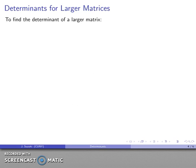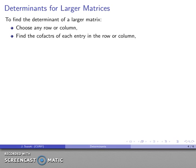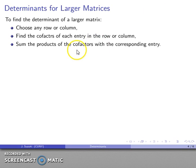Now let's find the determinant of larger matrices. We can do this as follows: choose any row or column, find the cofactors of each entry in that row or column, and sum the products of each entry with its corresponding cofactor.